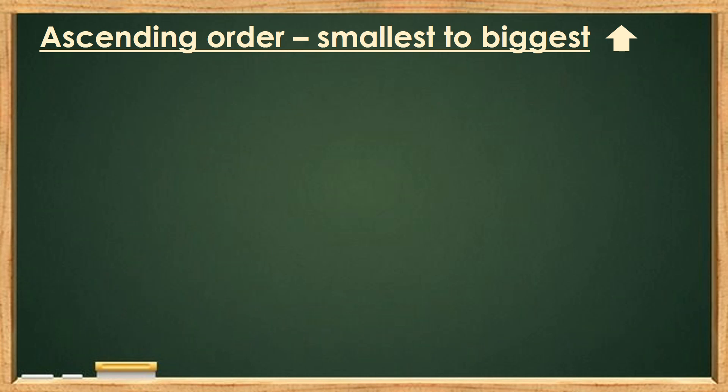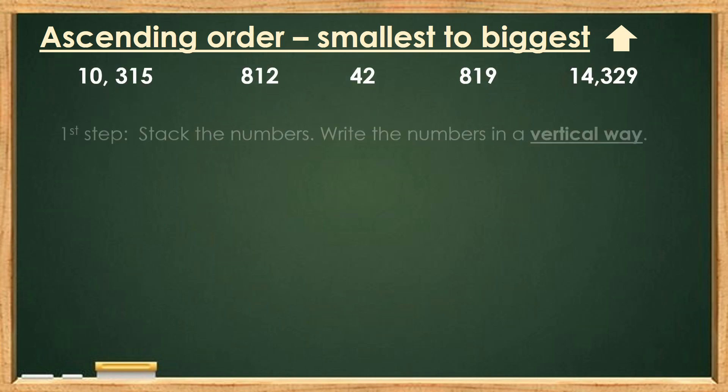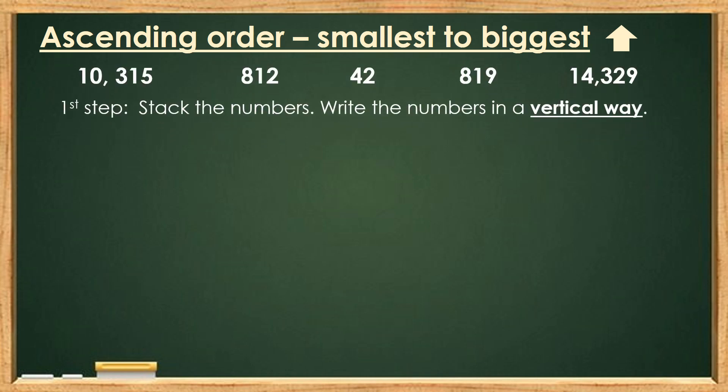Let's look at another example. Again, let's order the numbers in ascending order — it means smallest to biggest. Step number 1: Stack the numbers. Write the numbers in a vertical way.